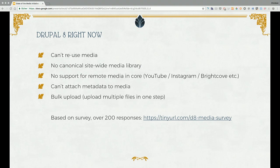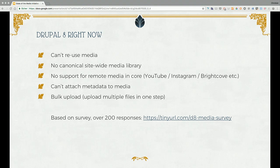What we currently cannot do is reuse media. You have to upload an image every time you want to use it — if you want to reuse an image, it's not possible to use the one you already uploaded. We don't have a site-wide media library. We have no support for any remote stuff, so just support for uploading images or files, but it's not possible to add YouTube stuff, Twitter stuff, or other remote media. And we are not able to attach metadata beyond title tag and alt tag. We also have bulk upload — you can upload to images-per-file field. That's it.